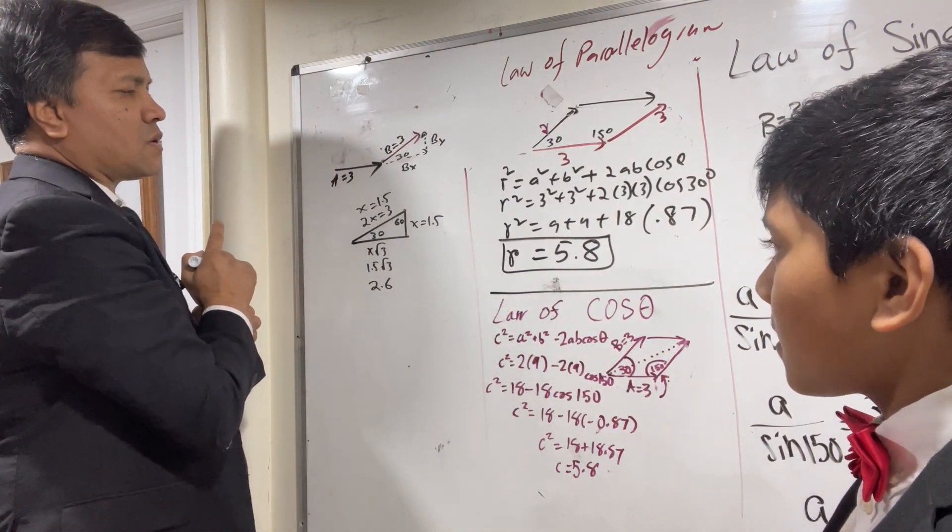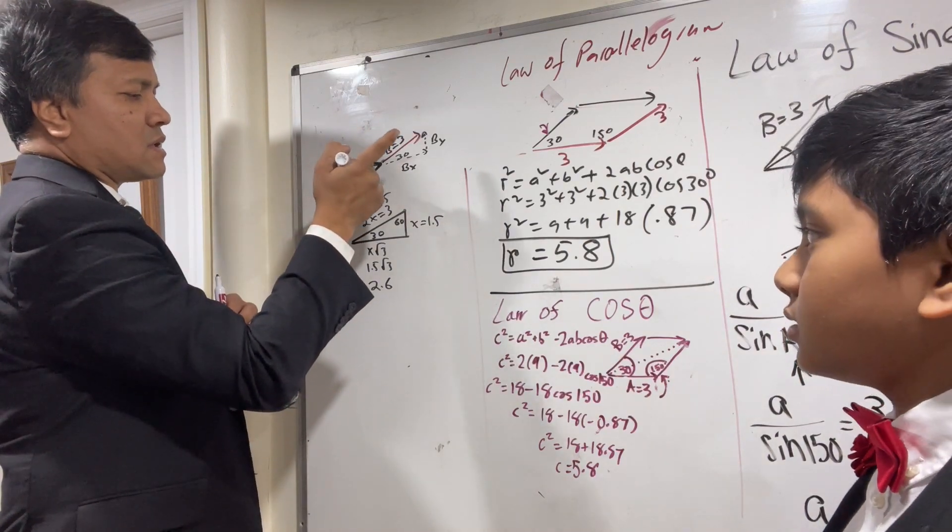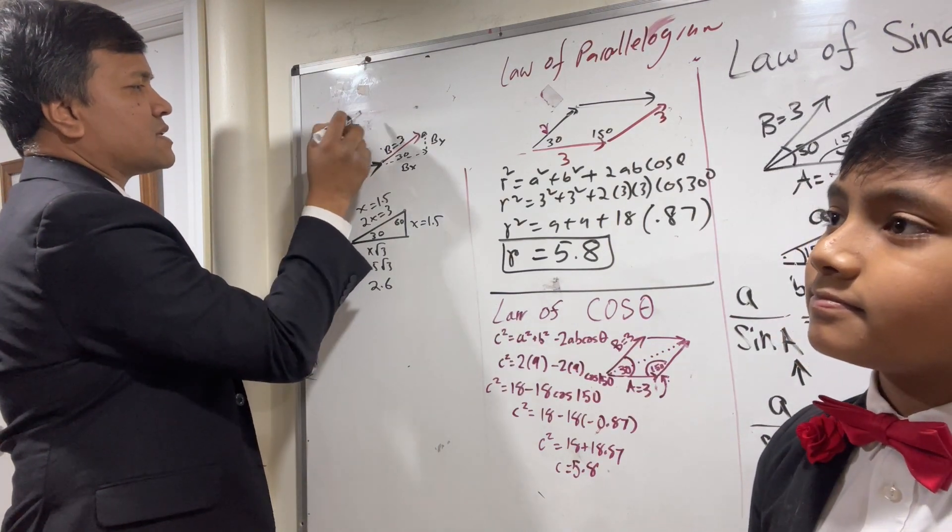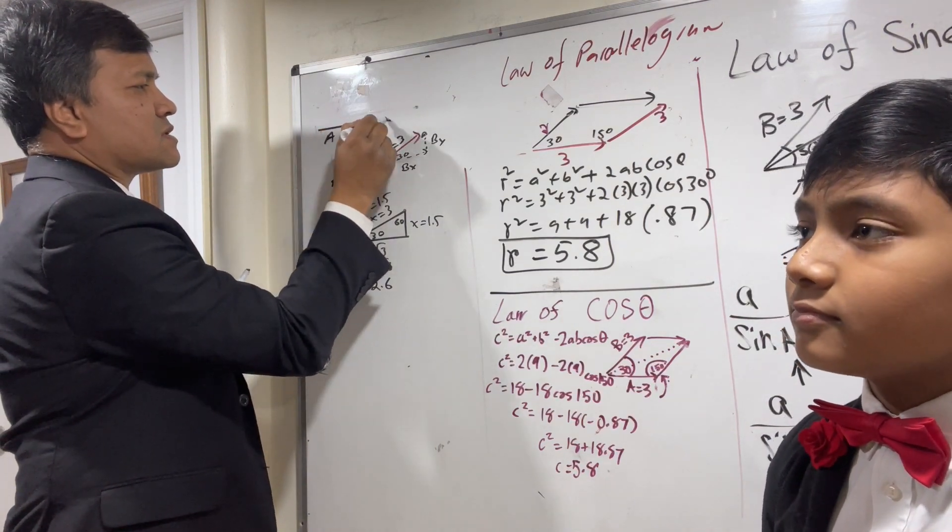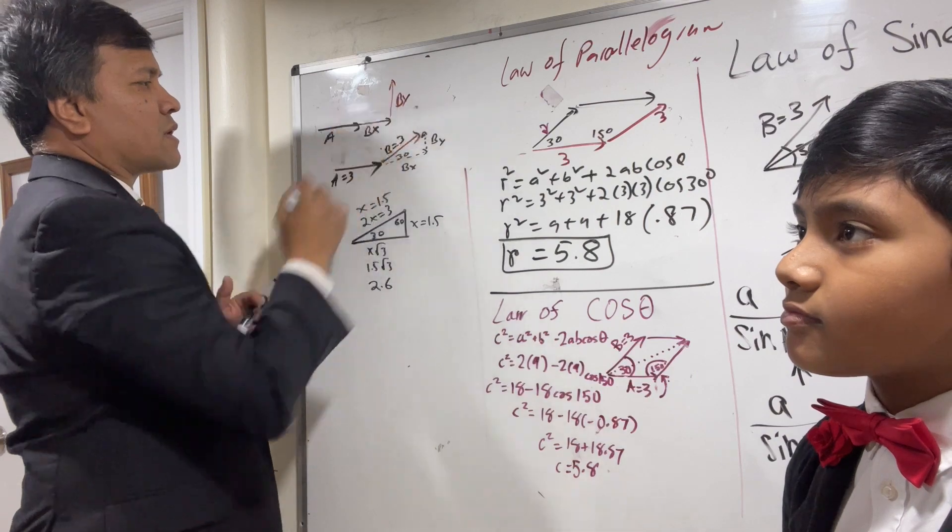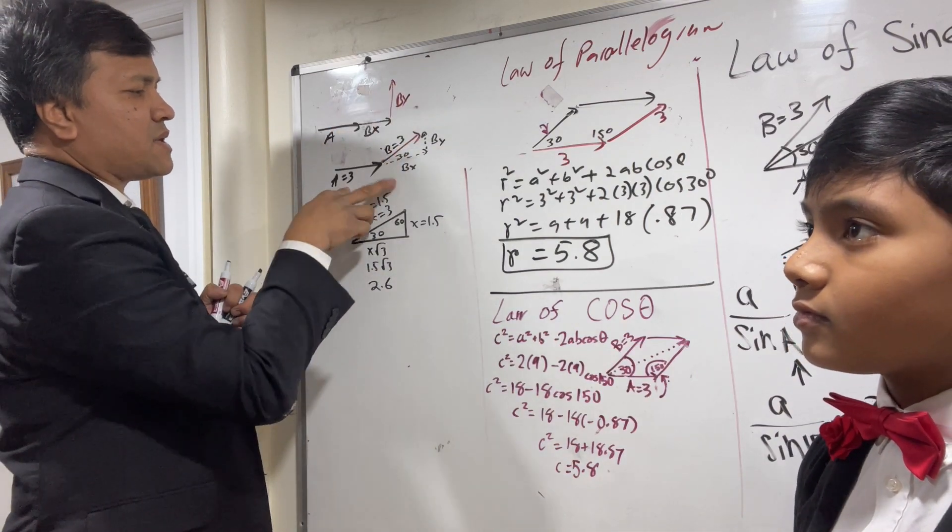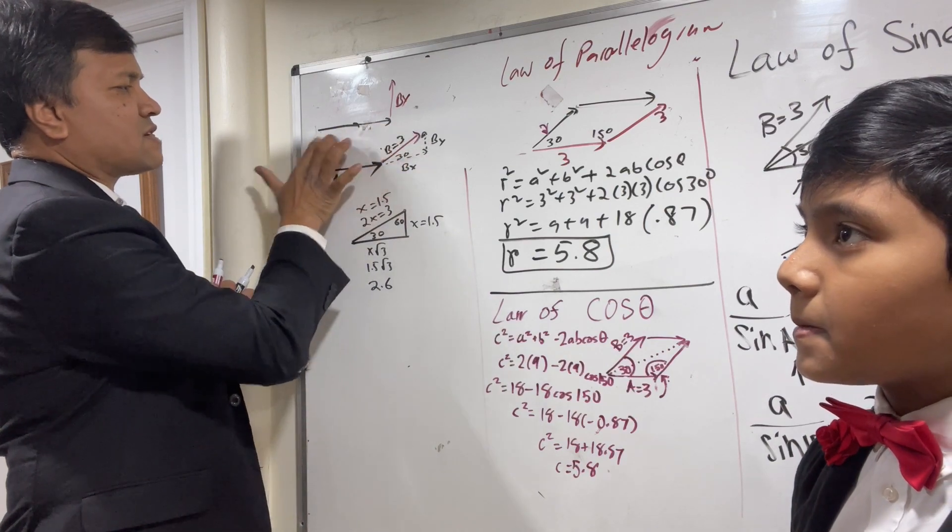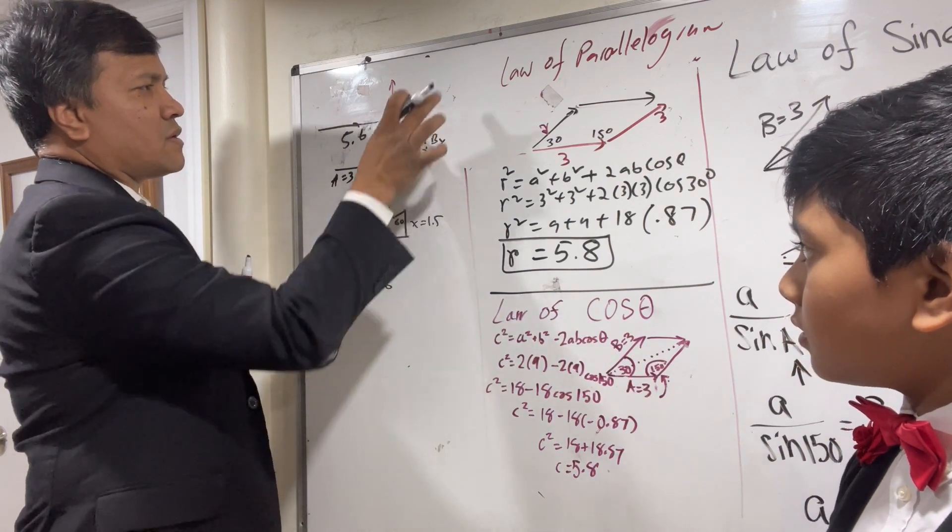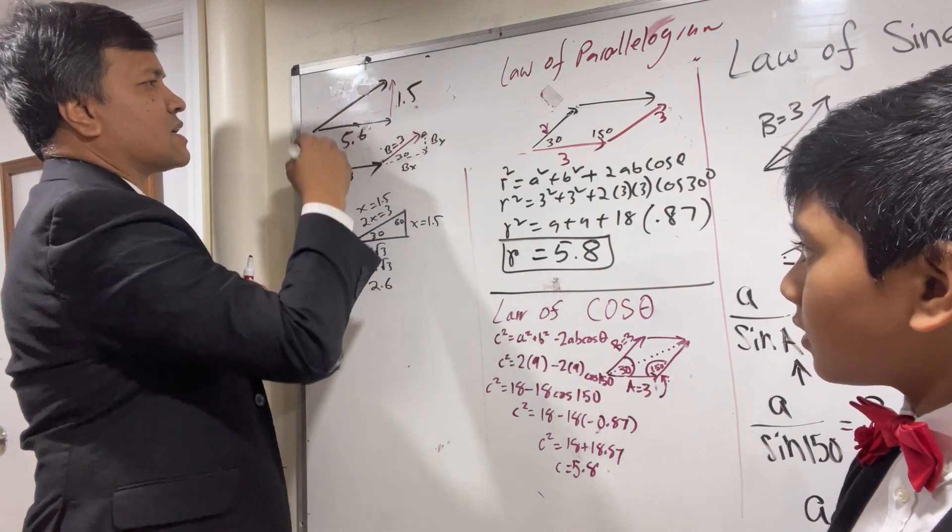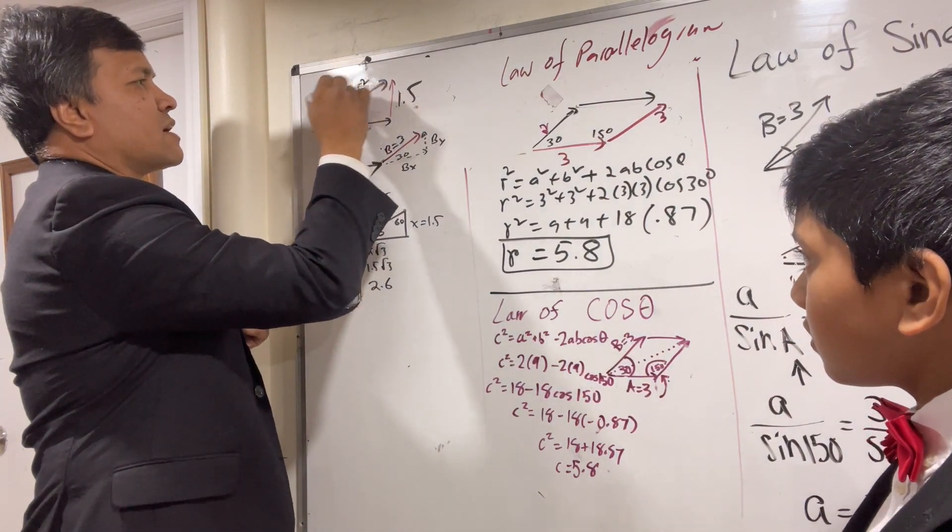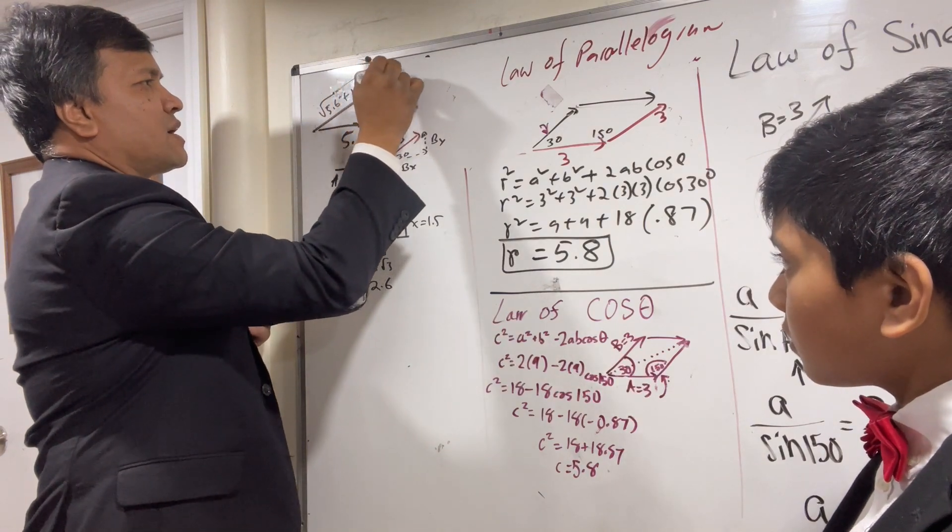So now, let's add the components. This is A, and this is Bx, and this is By. A plus Bx is... A is 3, Bx is 2.6, so 5.6. And By is 1.5. So this is resultant. And this has to be 5.6 squared plus 1.5 squared. And that has to be 5.8. And this is geometry.